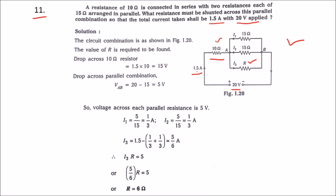The supply current is 1.5 amps and the resistance in series is 10 ohms. The supply voltage is 20 volts. Let us find the voltage across the 10 ohm resistance. Using the formula V = R × I, with I = 1.5 and R = 10, we get 15 volts. So the voltage across the 10 ohm resistance is 15 volts.